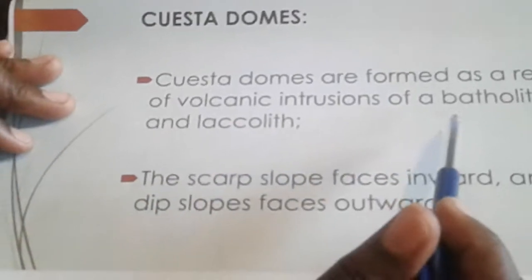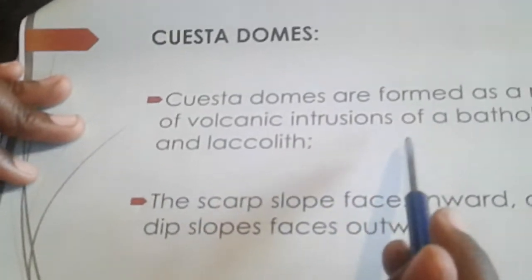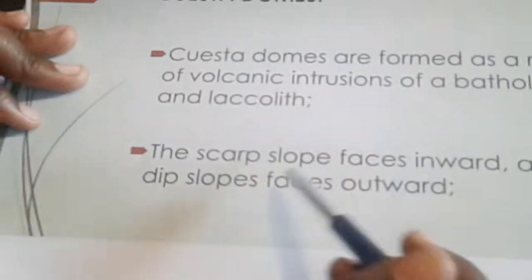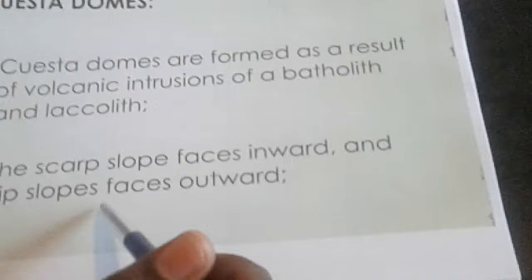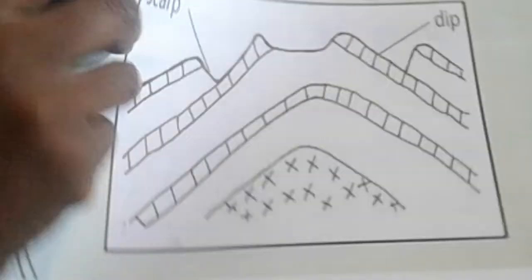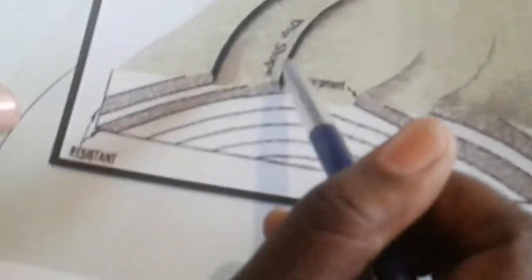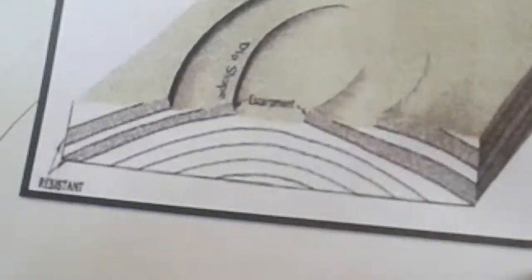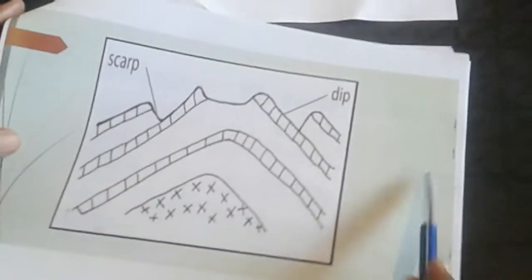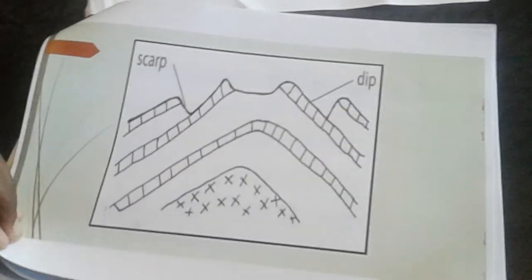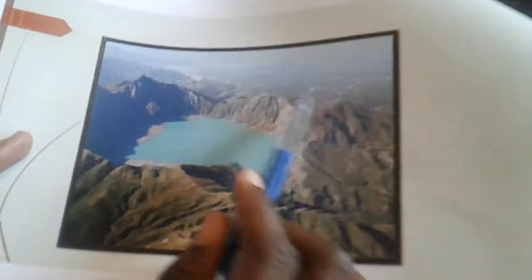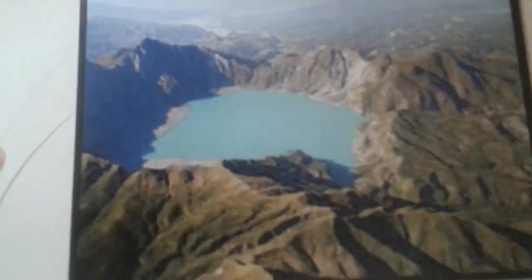With the cuesta domes, they are also formed from volcanic intrusions — batholiths. The scarp slope is the one that faces inward, and the dip slope, which is the gentler slope, faces outward. This is what we call a cuesta dome, and this is how you identify it in sketches and in real life.